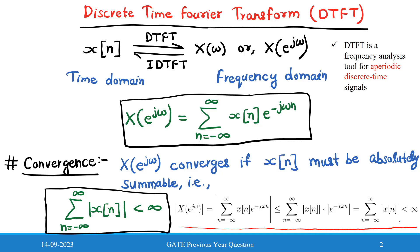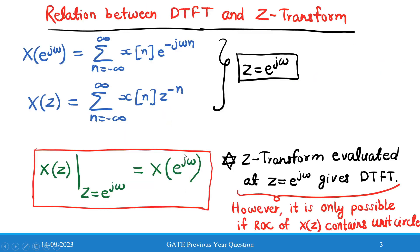This is the convergence condition for DTFT. Now we will see the relation between DTFT and the Z-transform. The expression for DTFT is written as shown, and the Z-transform is written as shown. Comparing both expressions, we can write z = e^(jω).